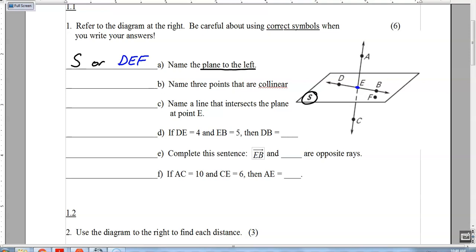Part B, name three points that are collinear. So remember, collinear means they live on the same line, which would be points D, E, and B.